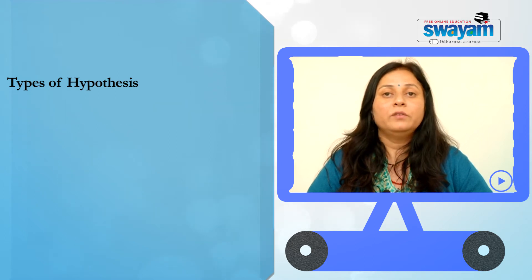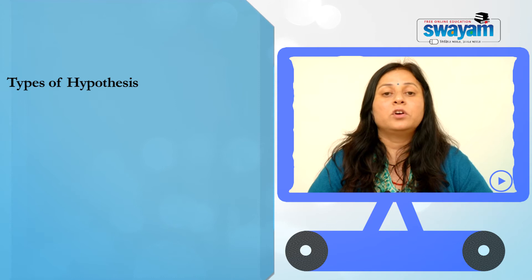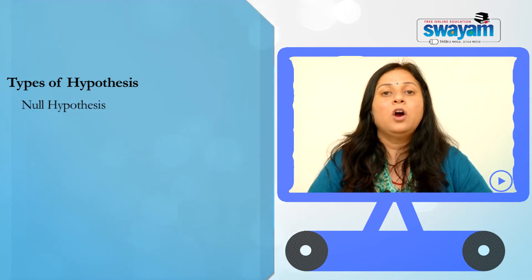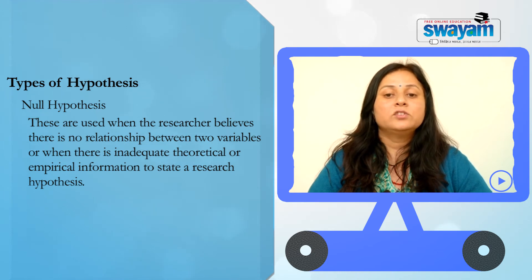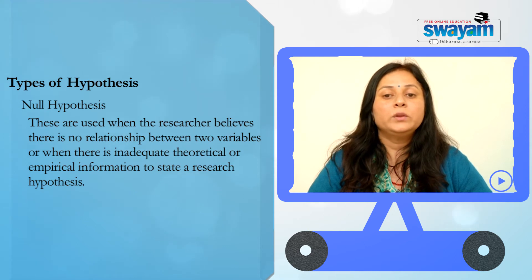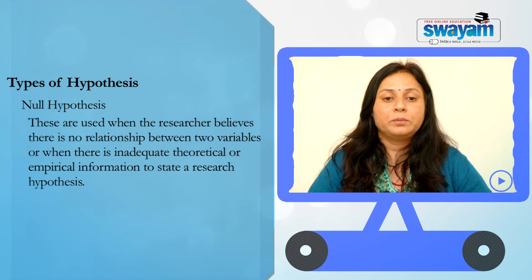Now we come to a very important type of hypothesis, which is called the null hypothesis and alternative hypothesis. Null hypotheses are used when the researcher believes that there is no relationship between two variables, or when there is inadequate theoretical or empirical information to state a research hypothesis.